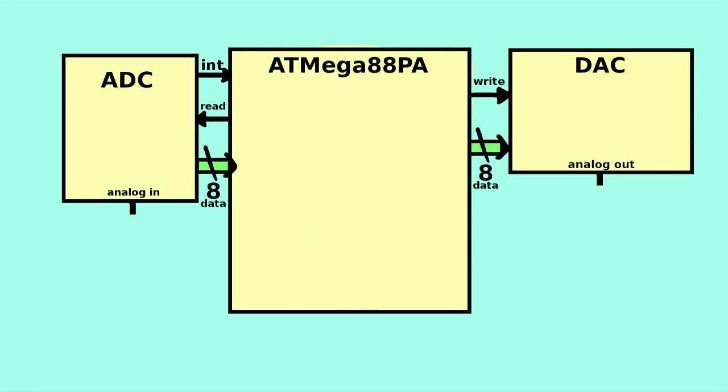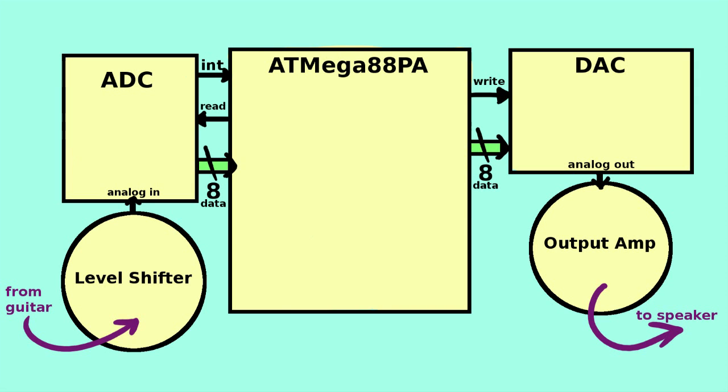In order for the ADC to read the guitar properly, the voltage level of the guitar needs to be shifted up and amplified to be within the ADC's reading range. Similarly, the DAC requires an output amplifier in order to be able to drive the speaker without burning itself out.